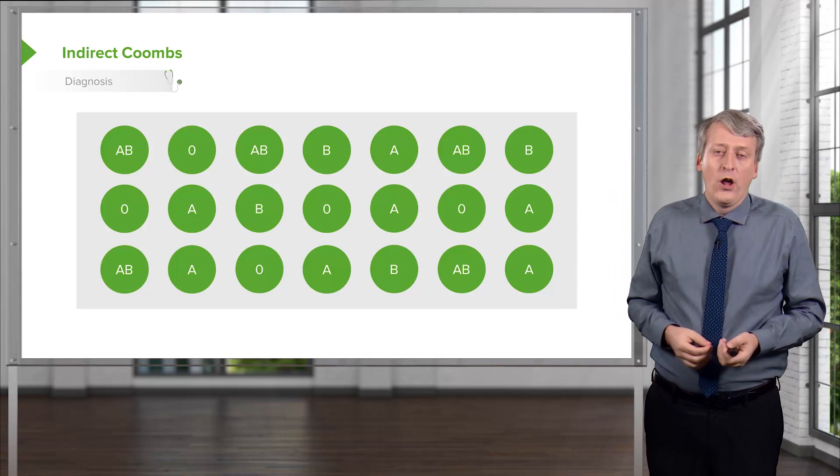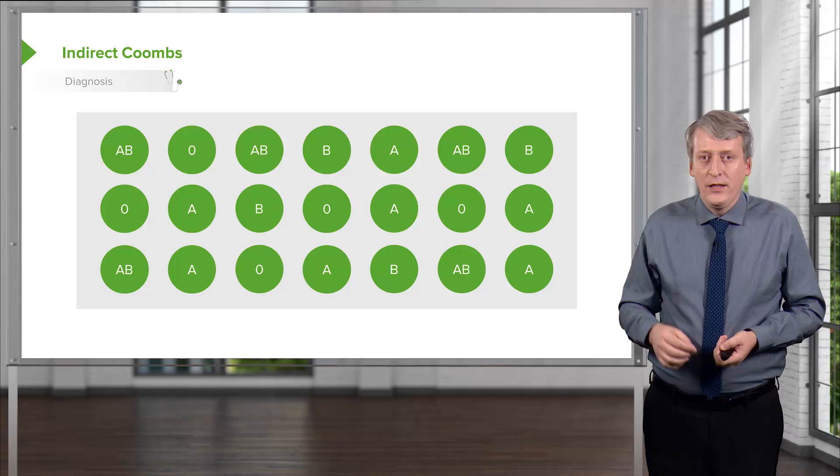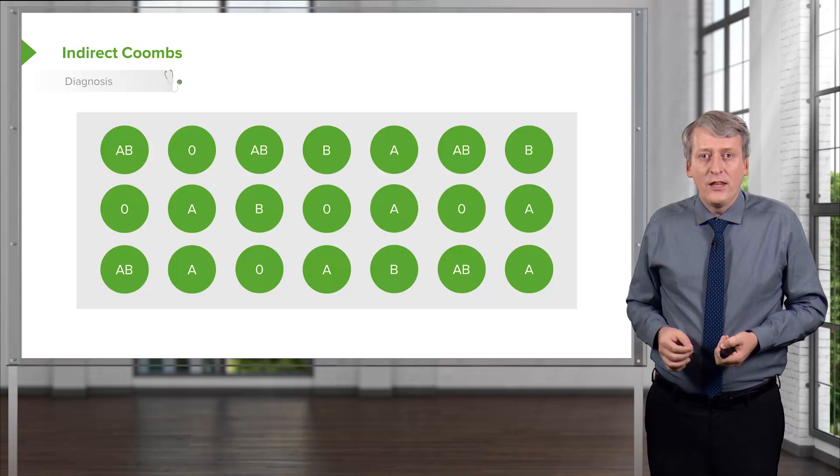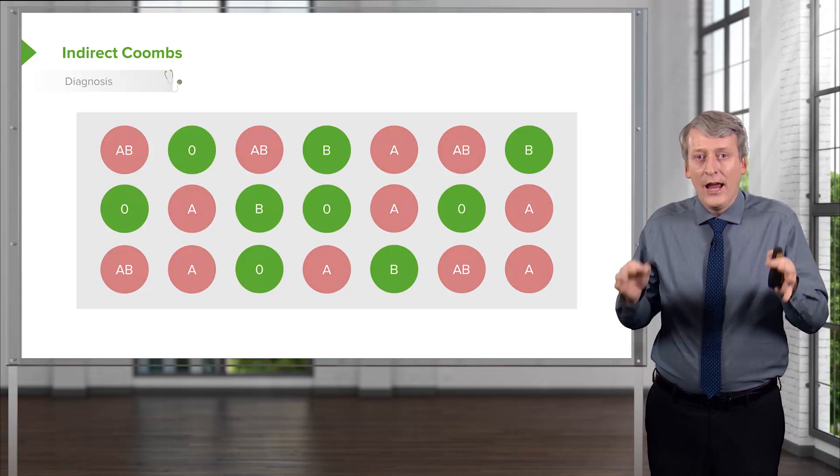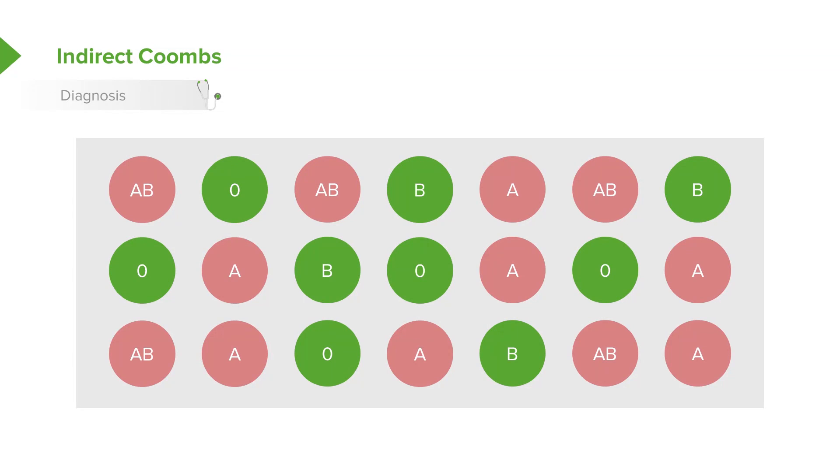Now I take our patient with autoimmune hemolytic anemia and I put it in there. Let's say that this patient had anti-A antibodies. All of these dishes would see clumping, but the other dishes would not.